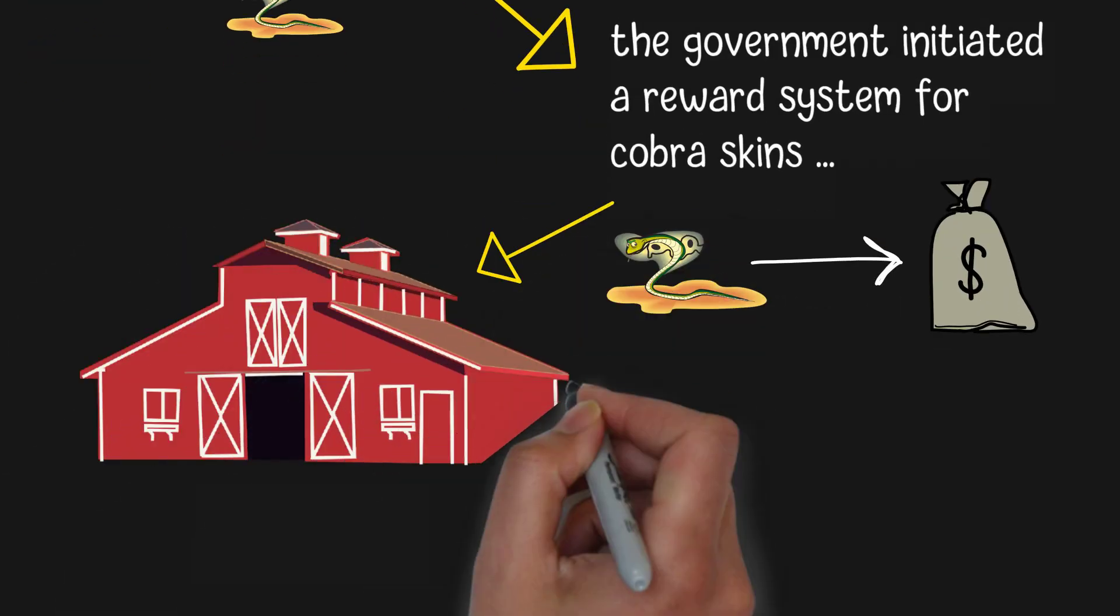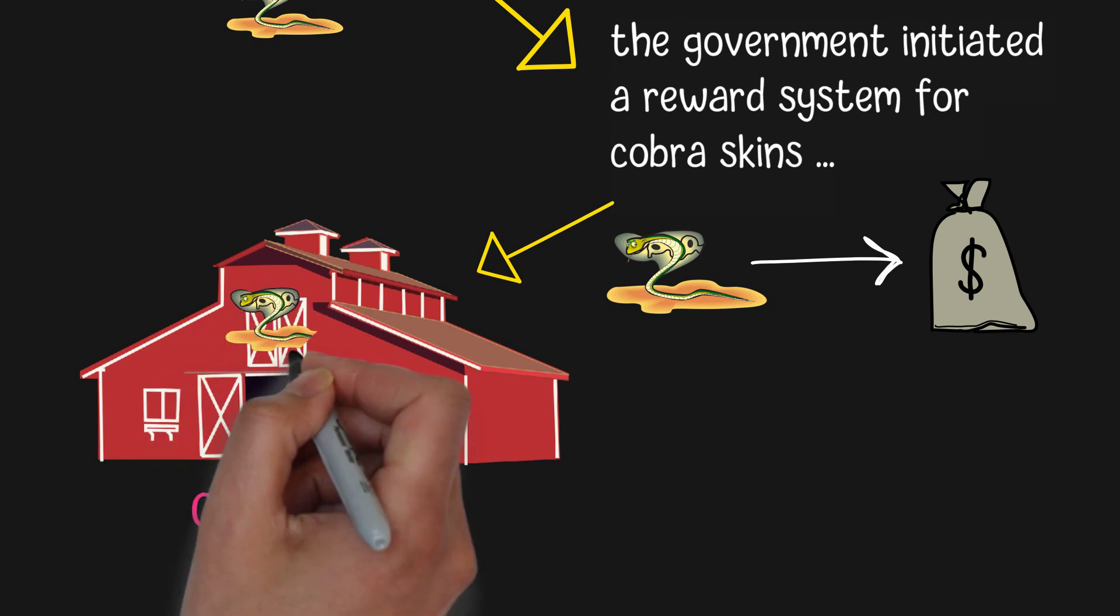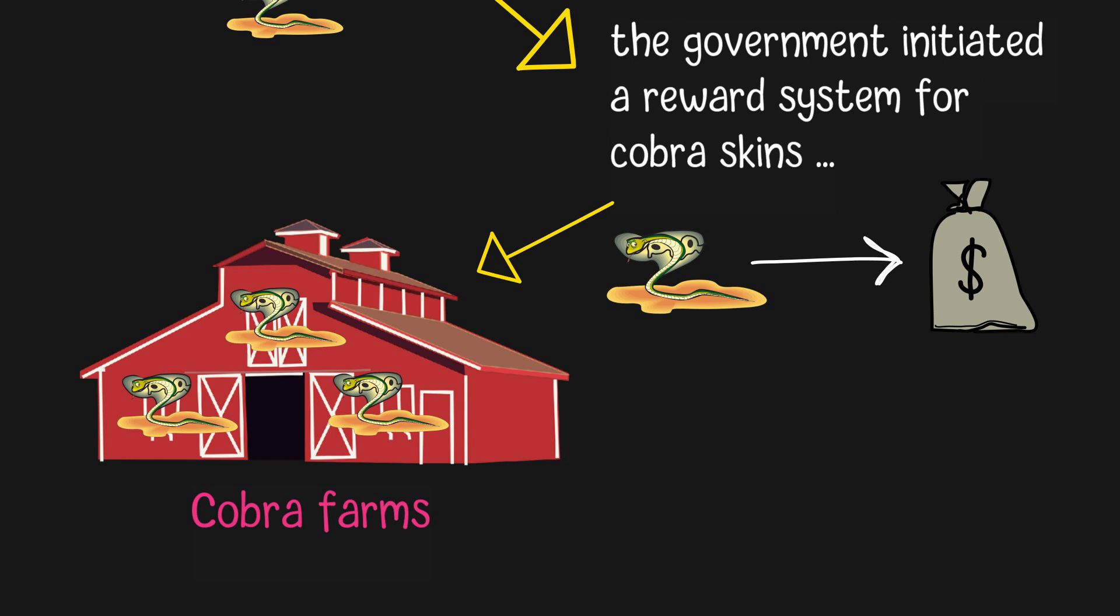instead of capturing wild cobras and eliminating them, people began raising cobras for their skins from lots of new cobra farms. Soon, the government realized the existence of the cobra farming industry cannot decrease the number of wild cobras, and then they terminated the program for those incentives.